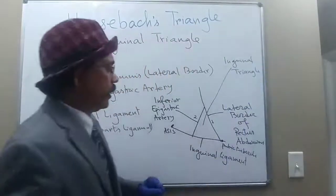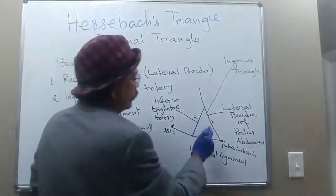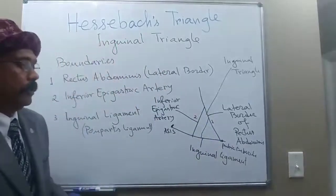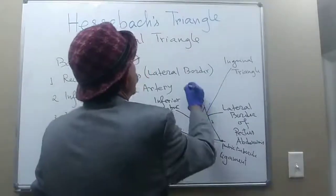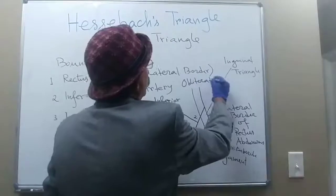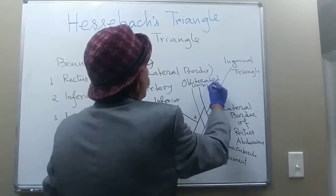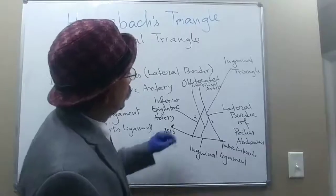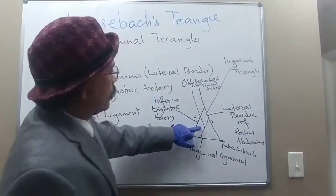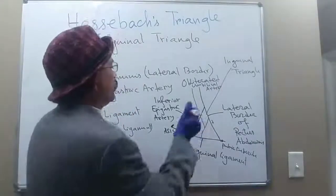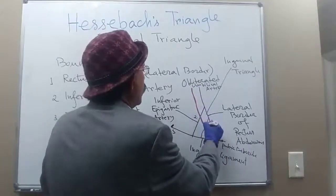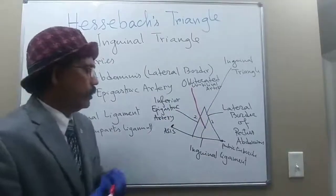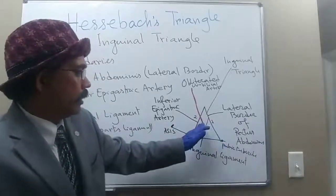This triangle is further divided into two parts by means of the obliterated umbilical artery. The obliterated umbilical artery divides the triangle into a medial part and a lateral part.